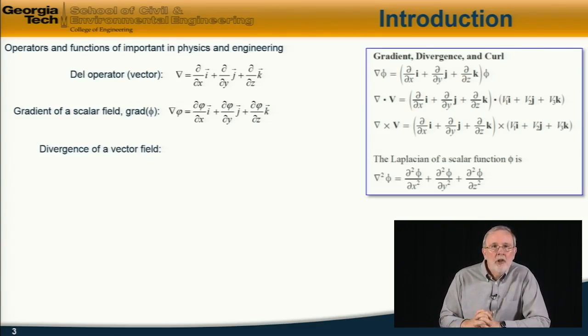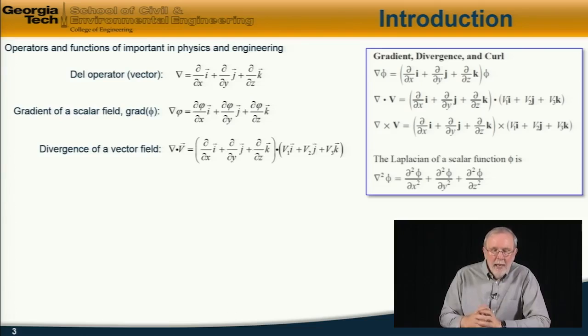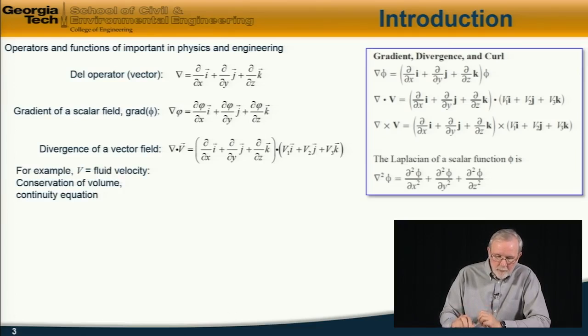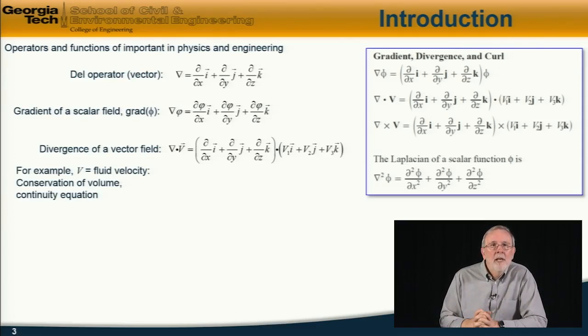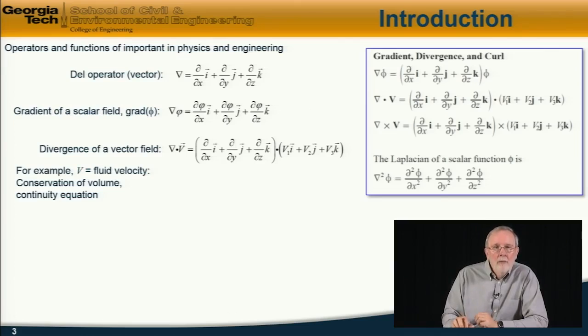Next, we have the divergence of a vector field. And the divergence of a vector field is defined as the dot product between the del operator and the vector field itself, as written out here. And this has applications, for example, in fluid mechanics. If the vector field v is the fluid velocity, then the divergence of the velocity field becomes the continuity equation. The divergence of the velocity field is equal to zero, which is an equation for conservation of volume in an incompressible fluid.